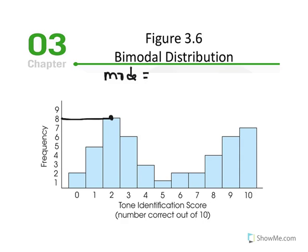Some students will have the tendency to write mode equals 8, and that would be incorrect because 8 represents the frequency. What we report for the mode is the x value. So the mode would be reported as 2, not 8. 8 is the highest frequency; we then report the actual x value on the abscissa. Don't make that mistake — it's very common.